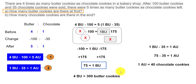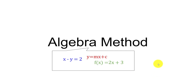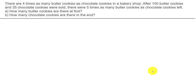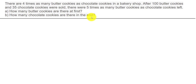Now, if you're not interested in the algebra method you can stop watching. But if you want to know how to solve this using algebra equations, let's go through that now. The same question: there are 4 times as many butter cookies as chocolate cookies. After 100 butter cookies and 35 chocolate cookies were sold, there were 5 times as many butter cookies as chocolate cookies left. How many butter cookies at first, and how many chocolate cookies at the end?